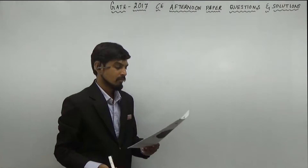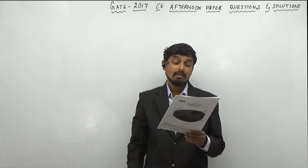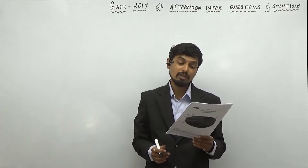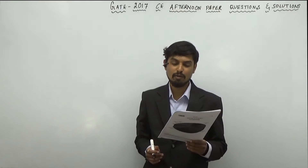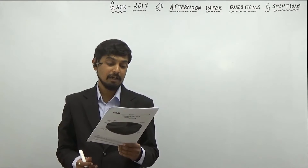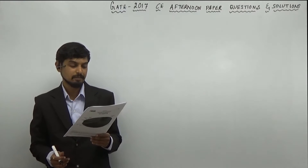Next question. A 1 meter wide rectangular channel carries a discharge of 2 meter cube per second. From the specific energy curve, it was found that the subcritical depth of flow was twice the critical depth of flow. The subcritical depth of flow in meters is to be determined.